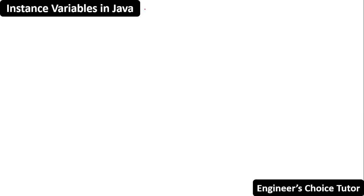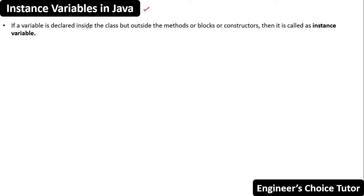In today's lecture, we will discuss instance variables in Java. If any variable is declared inside the class but outside the methods, blocks, or constructors, then it is called an instance variable. Or you can say that a non-static variable of a class is called an instance variable. This type of variable is not declared with the static keyword, that's why it is also known as a non-static variable.